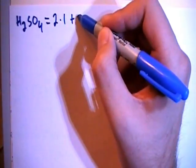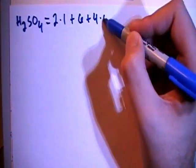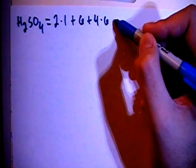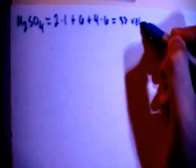Plus the sulfur with six electrons, plus four oxygens each with six electrons, for a total of 32 valence electrons.